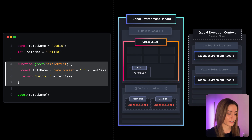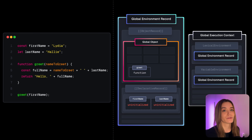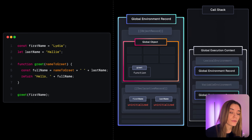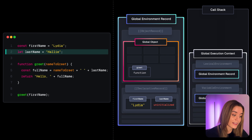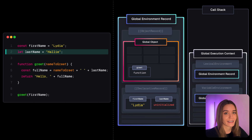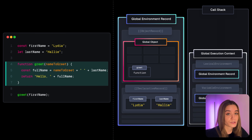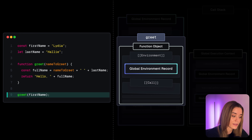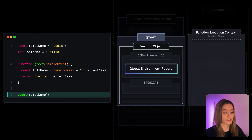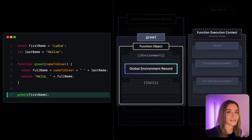Function objects contain many properties, including the environment property, which points to the environment record in which the function was declared — in this case, the global environment record — and the call method, which gets invoked whenever we call the function. With no other variables or function declarations, we move on to the execution phase. The global execution context is added to the call stack, firstName is initialized with 'Lydia', lastName with 'Halley', and then greet is invoked on line nine.